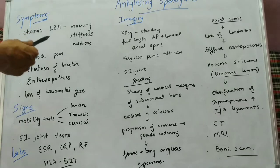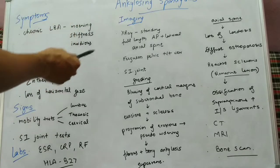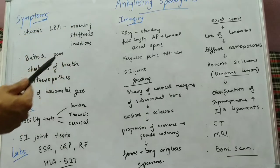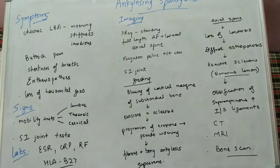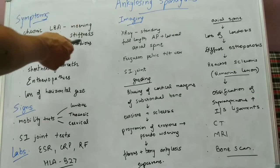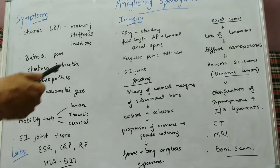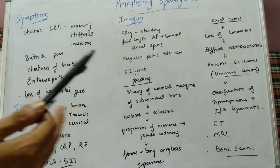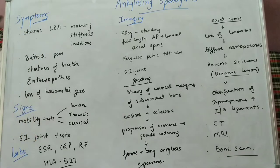The most common symptom the patient presents is chronic low backache. The first specification is low backache with morning stiffness — the patient will complain of low backache which is worse in the morning and associated with stiffness. There is not an acute onset of pain; it is an insidious increase in pain. The most common complaint is chronic low backache with morning stiffness and insidious onset.